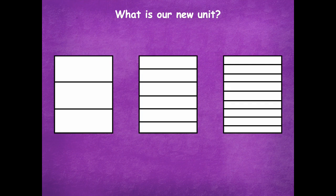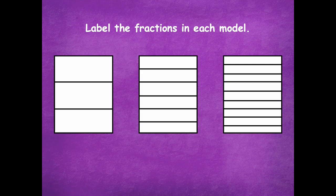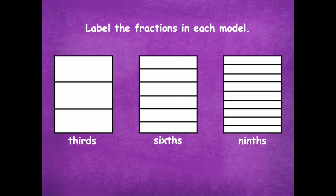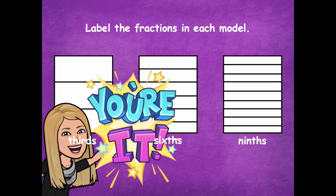So what's our new unit? We have ninths. We're going to label the fractions in each model. So here we have thirds, sixths, and ninths. You don't have to label one third, one third, one third — you know that it's thirds, sixths, and ninths. Because we've been working with fractions, a unit fraction is one part of that. So we have one third for each of those parts, one sixth in the sixth model, and one ninth for each part in the ninth model. Pause the video and label thirds, sixths, and ninths underneath each model.